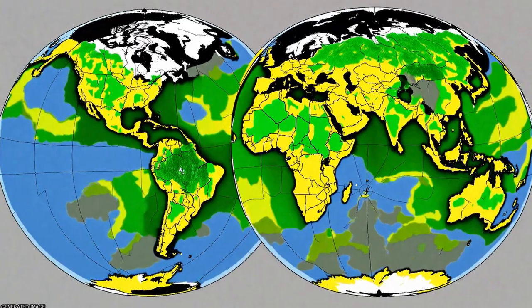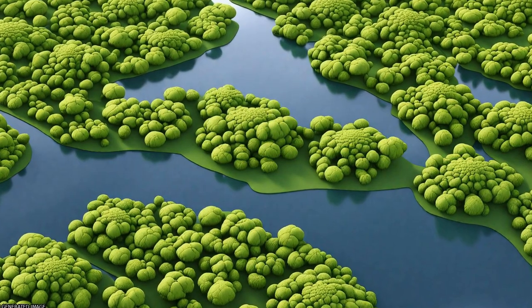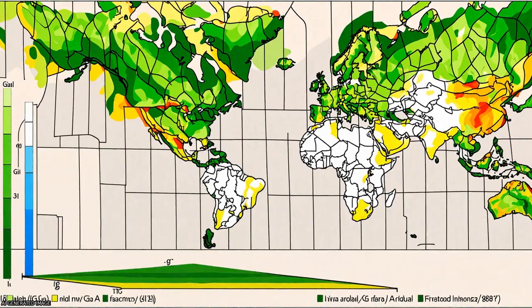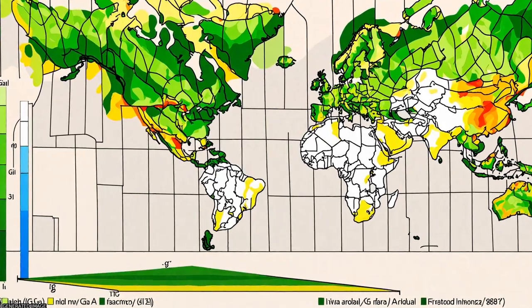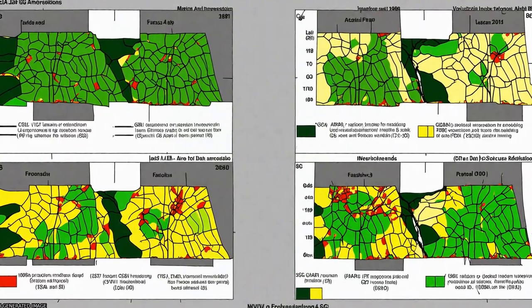The LAI-3G and FPAR-3G data sets can be obtained freely from the NASA Earth Exchange (NEX) website.